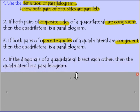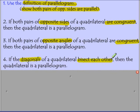And then the next one, which comes right from our properties, is if the diagonals bisect each other. So if you can show that somehow, then it must be a parallelogram.